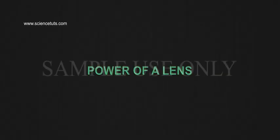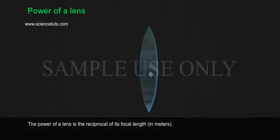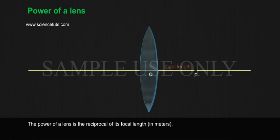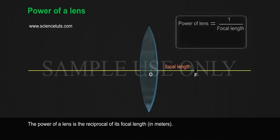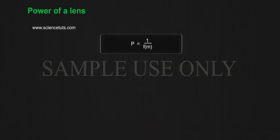Power of a Lens: Power of a lens is the reciprocal of its focal length in meters. It is represented by the letter P. The power P of a lens of focal length F is given by P equals 1 by F (in meters), or F equals 1 by P.